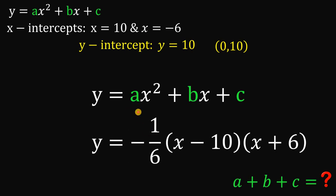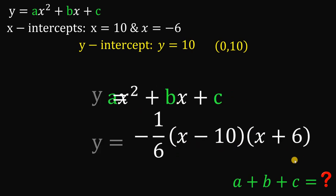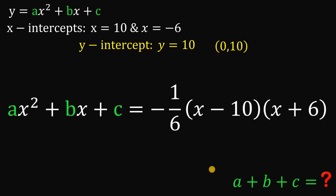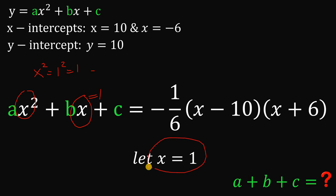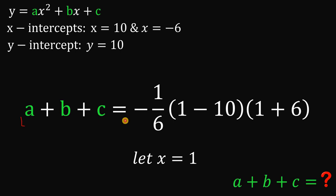Don't forget our goal: to find the sum a plus b plus c. Note that ax squared plus bx plus c equals negative 1 over 6 times x minus 10 times x plus 6. Now, if we let x equal 1, the x squared term becomes 1 squared which is 1, and the x term is also 1. So the left-hand side simplifies to a plus b plus c. Therefore, to get a plus b plus c, we just let x equal 1, giving us a plus b plus c on the left.